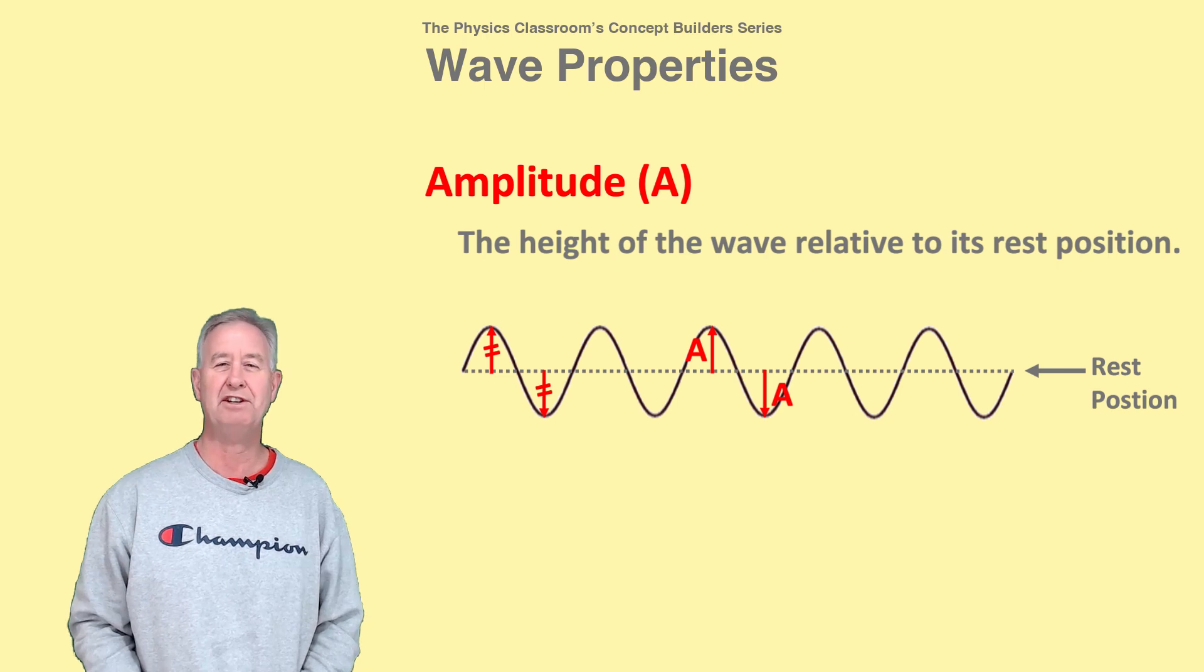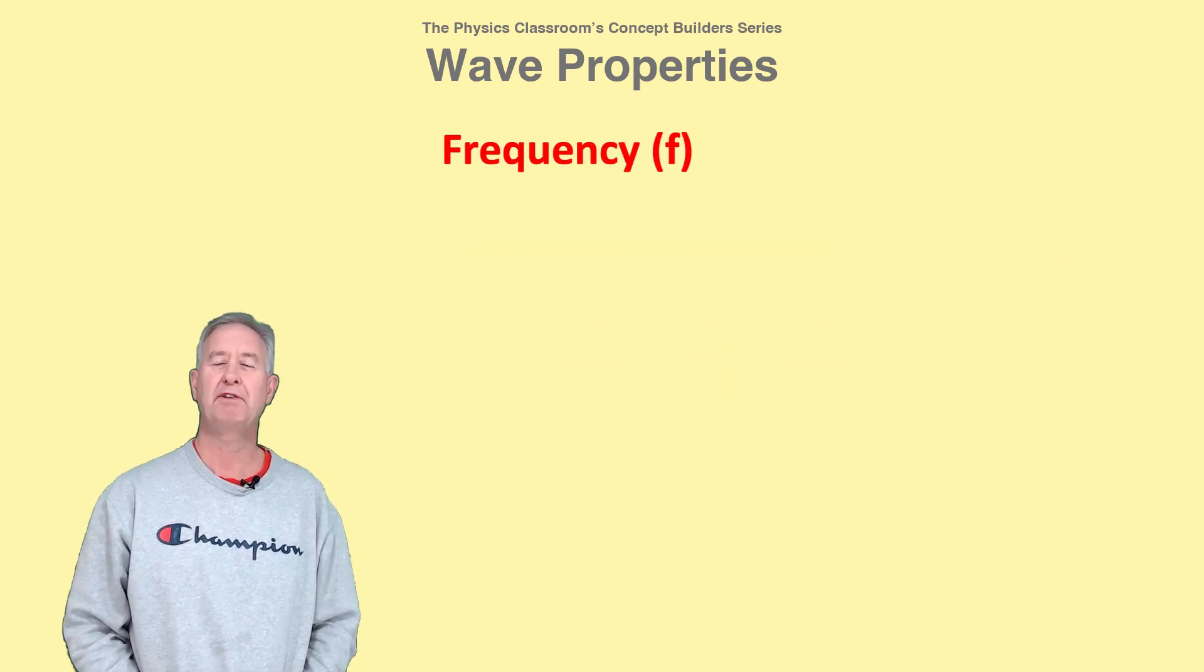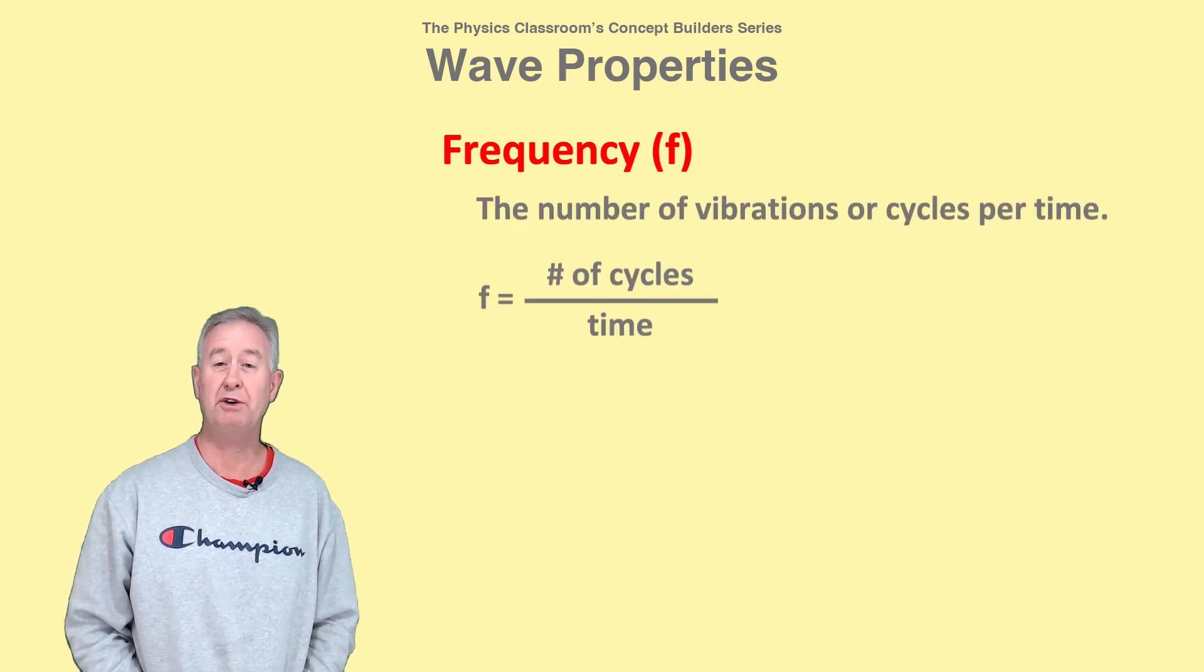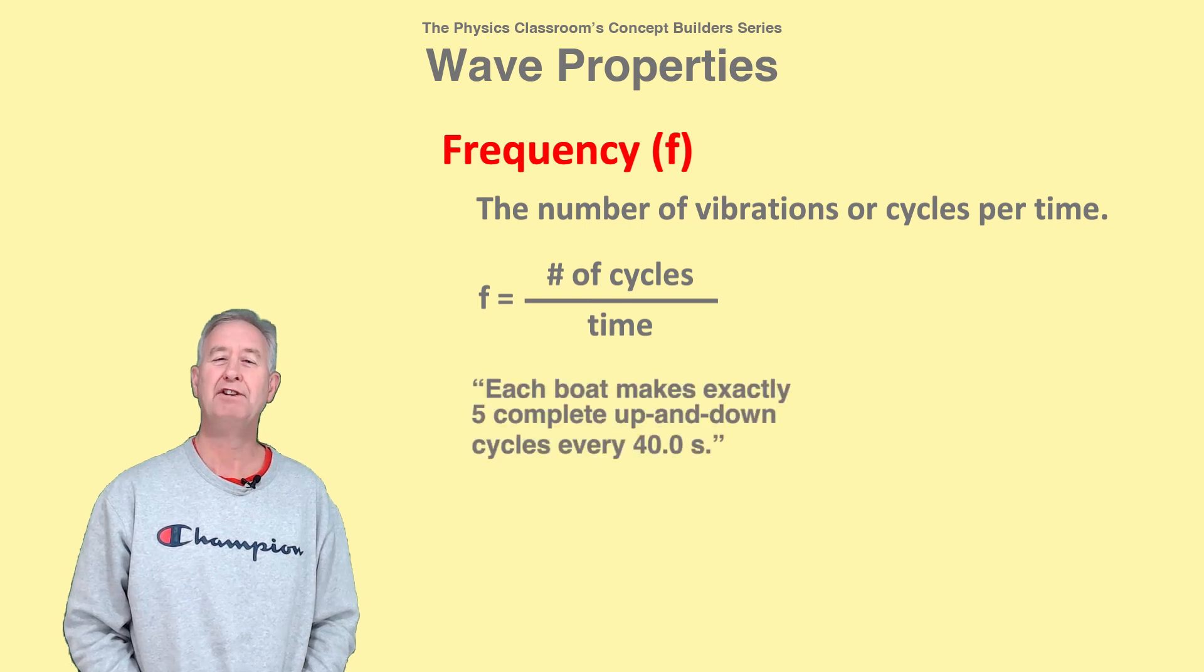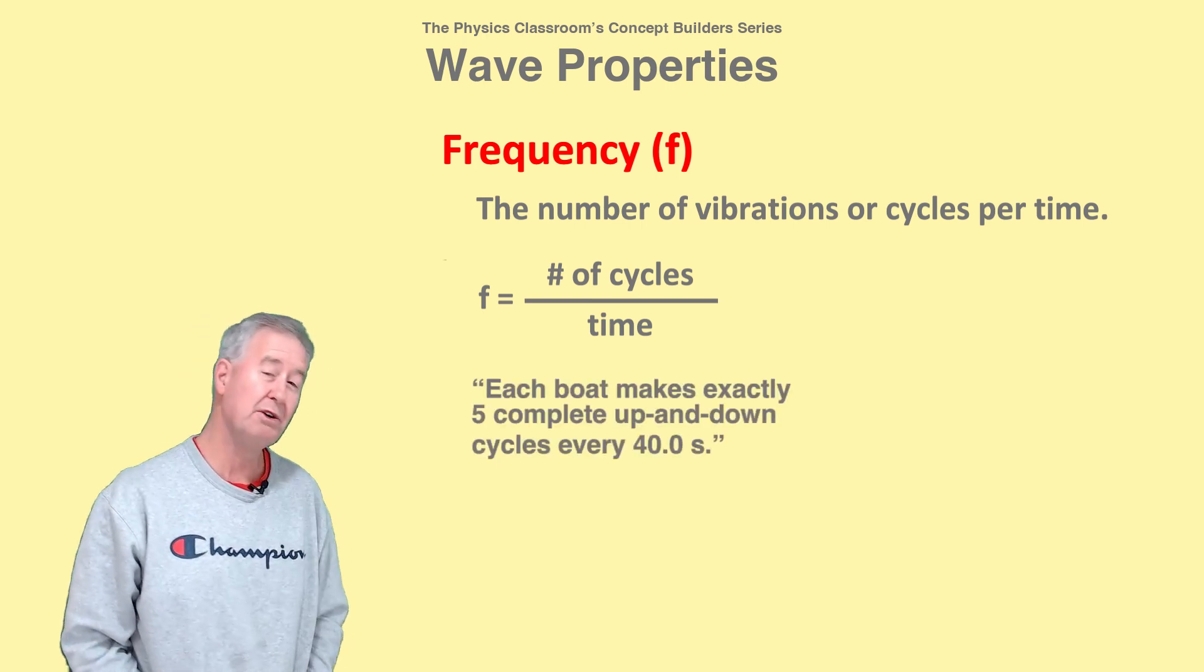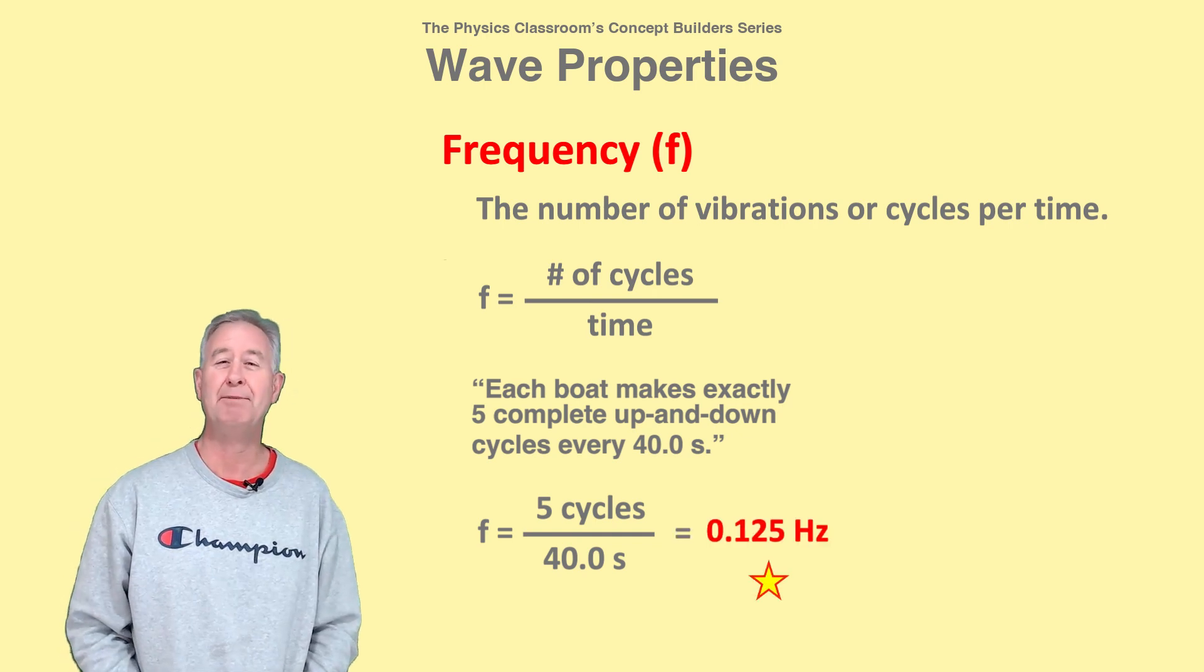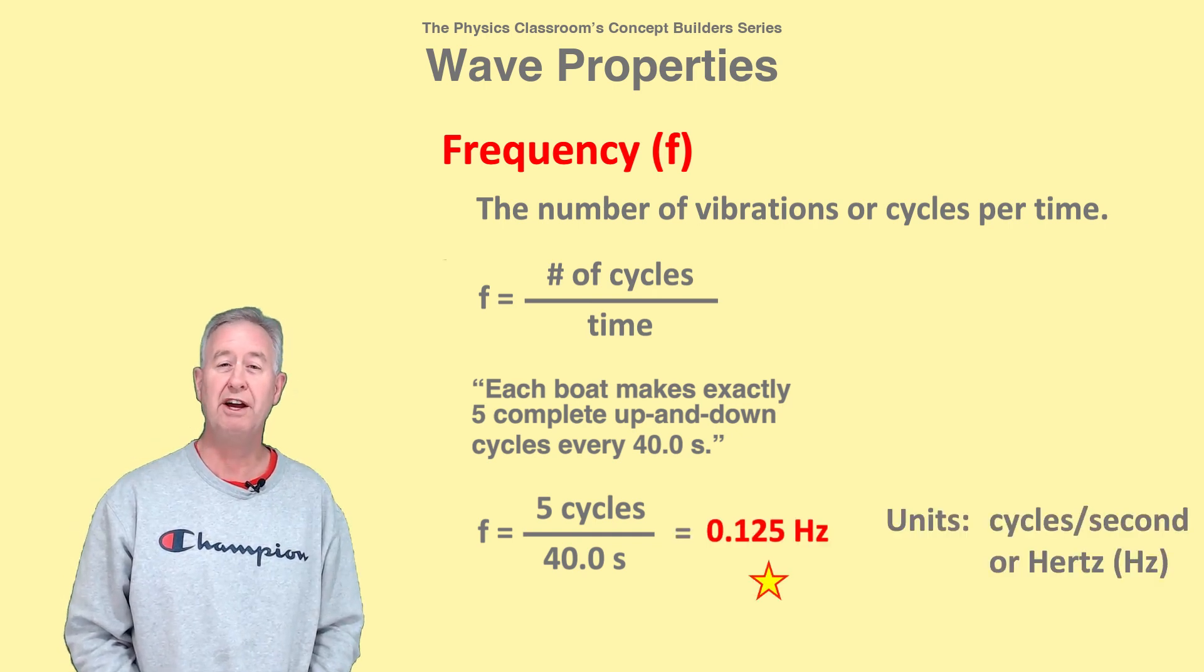Frequency refers to how often the particles complete vibrational cycles. It is the number of vibrations, or cycles, per time. If this information is known, then you can calculate the frequency by dividing the number of cycles by the time. The units are cycles per second, or hertz.